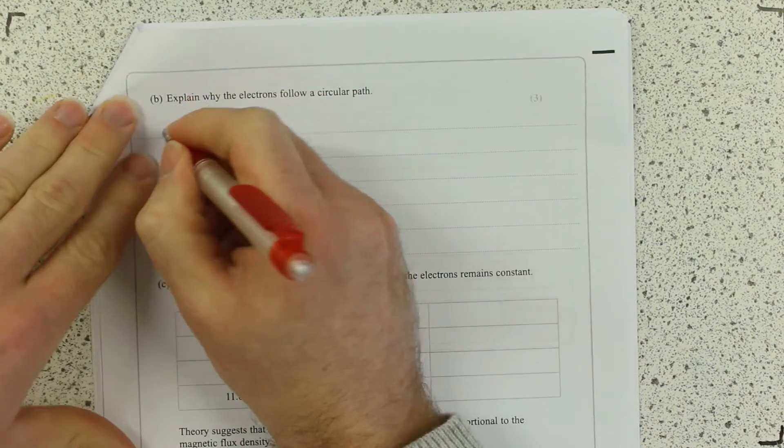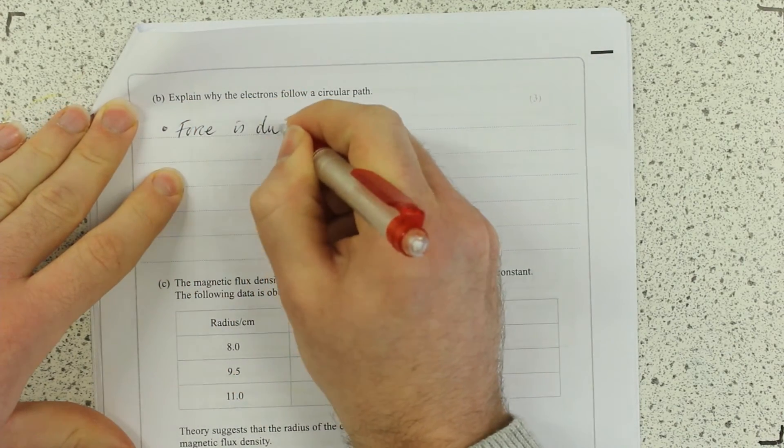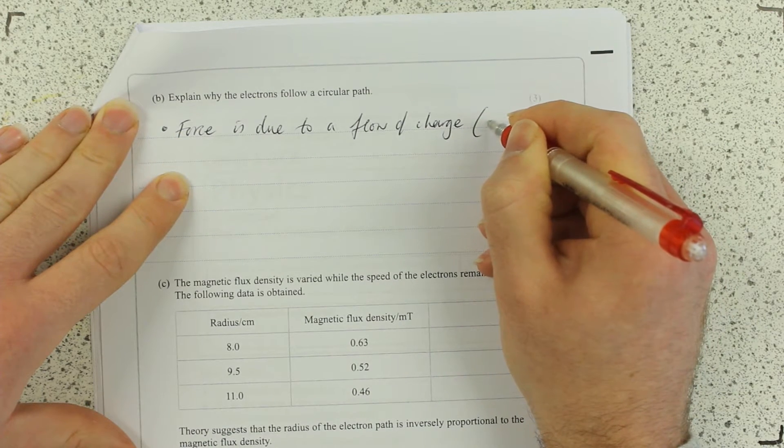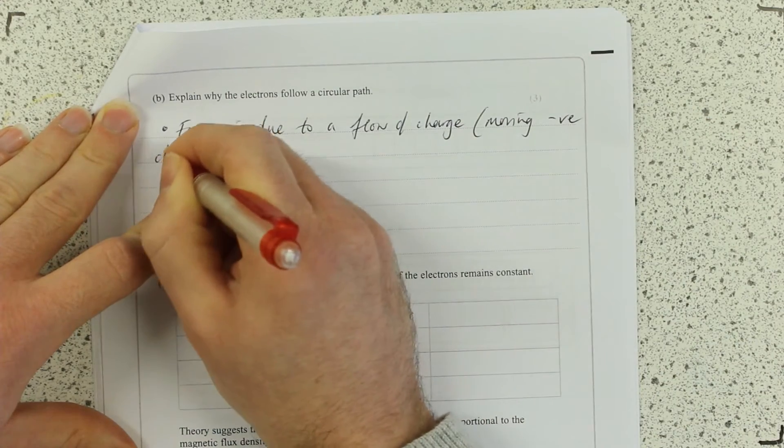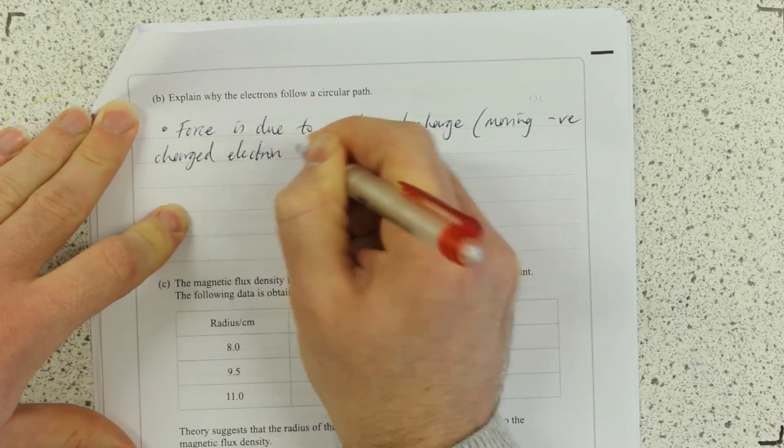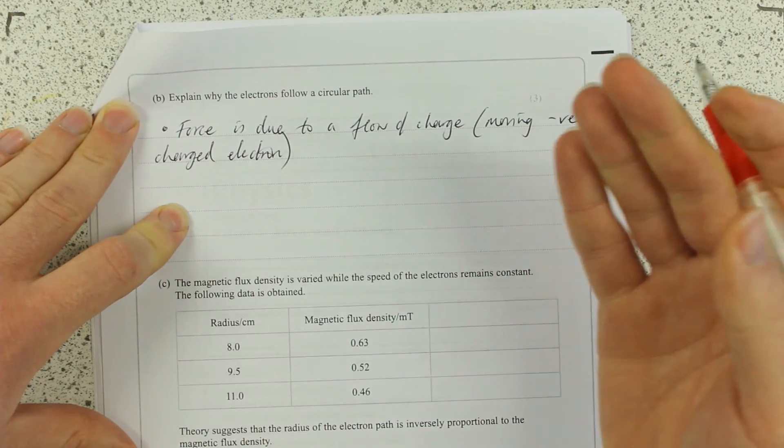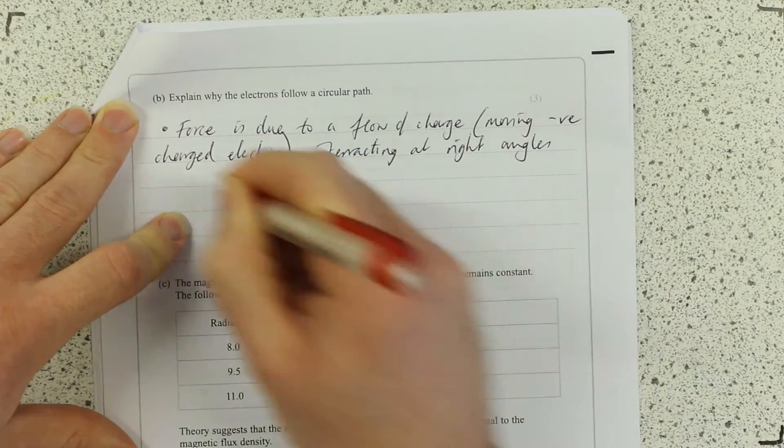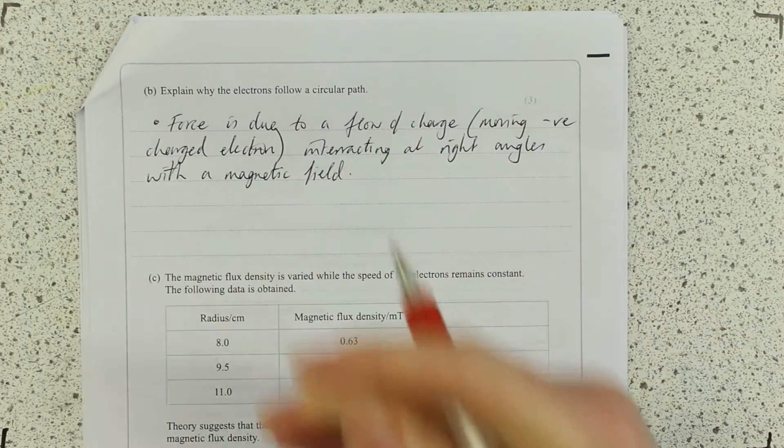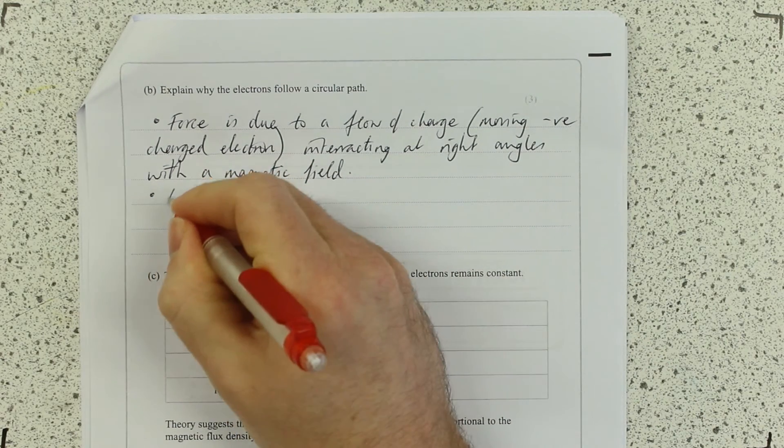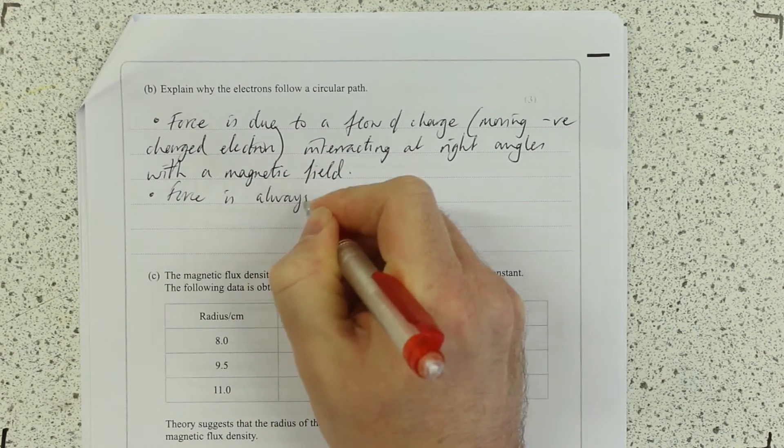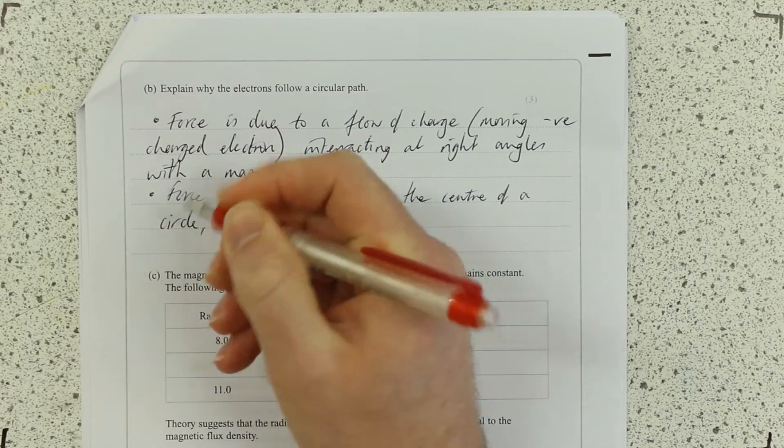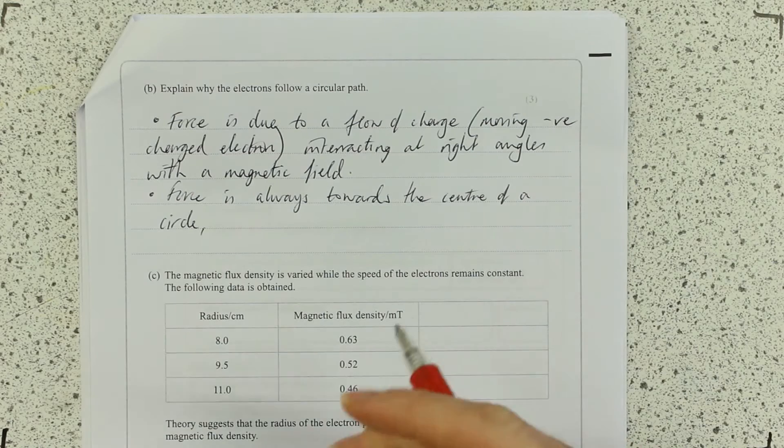The force is due to a flow of charge, moving negative charge of the electron, interacting at right angles with the magnetic field. In other words, Fleming's left-hand rule. This means that the force is always towards the centre of a circle. This means it's a centripetal force causing circular motion.